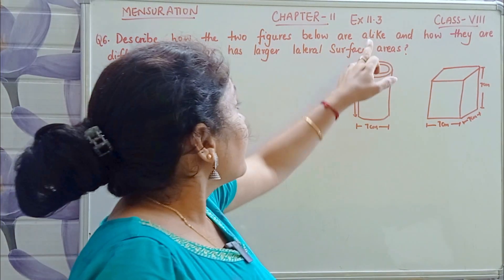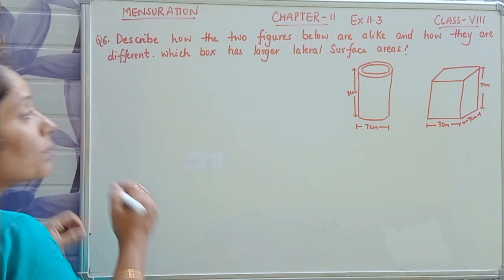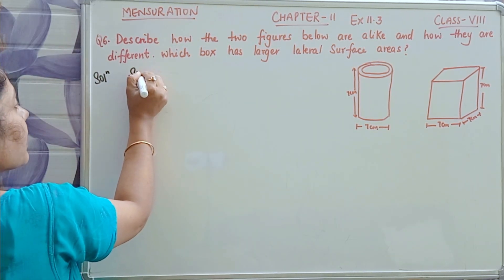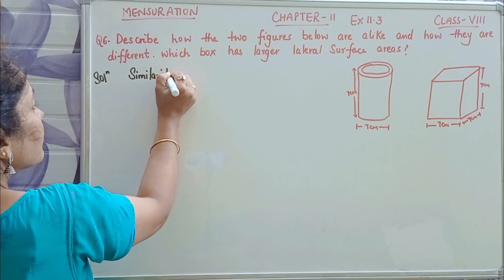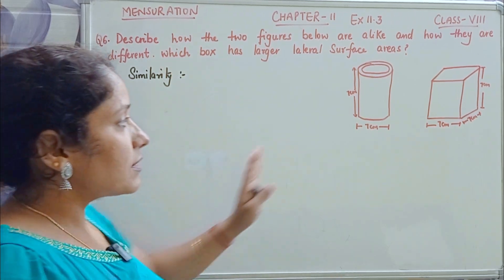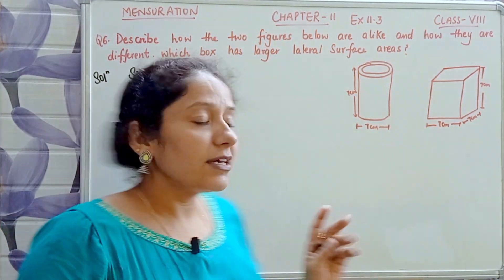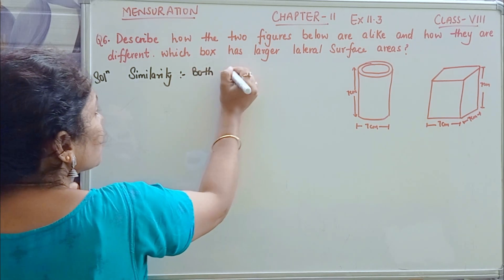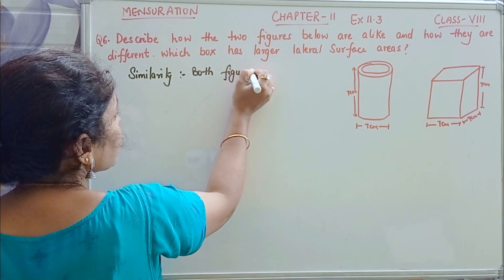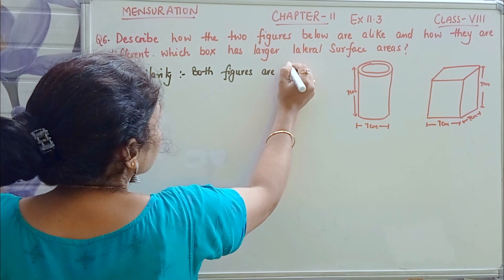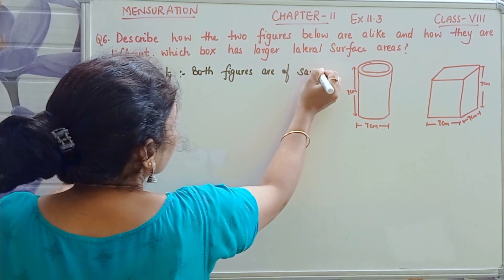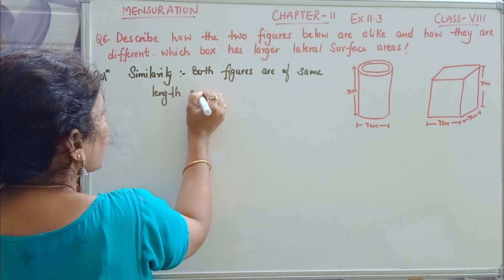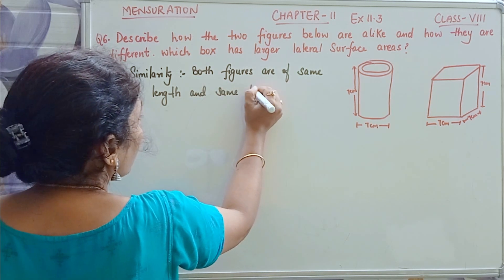Let's see — alike, meaning what is the same thing in both figures? The similarity is that both figures have the same length and the same height.